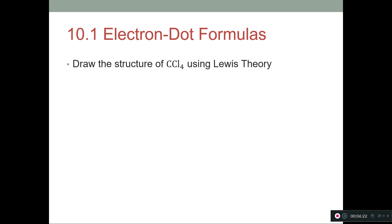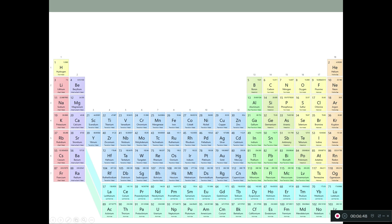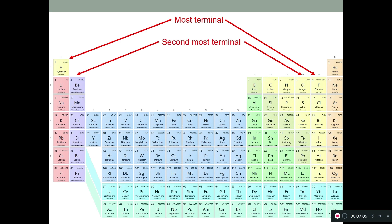Let's go through some examples. For carbon tetrachloride using Lewis theory: first, count all the electrons. Carbon has four valence electrons and there's one of them. Chlorines have seven electrons each and there are four of them, giving 32 total electrons. Next, find the central atom. Looking at the periodic table, the halogens in the far right columns are almost always terminal. Carbon is in the carbon column and is going to be our central atom.